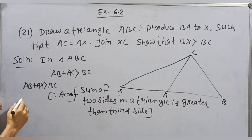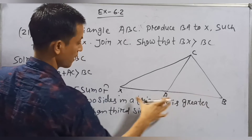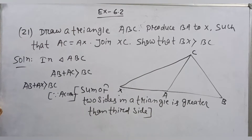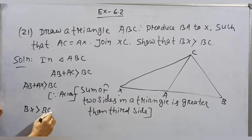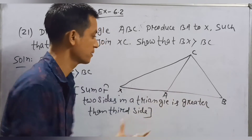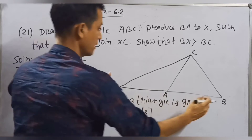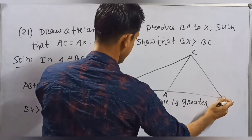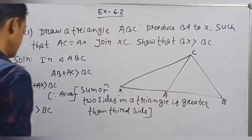Now AB plus AX together gives BX. Therefore BX is greater than BC. This completes the proof for question 21.